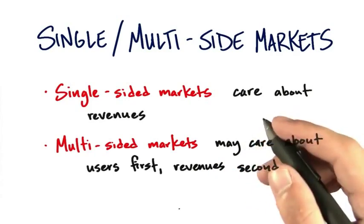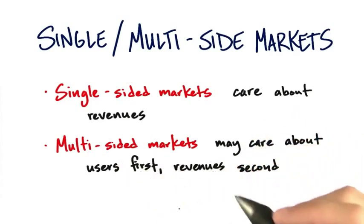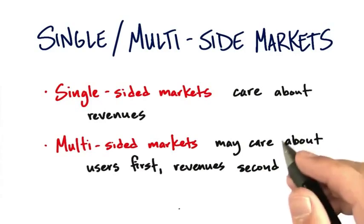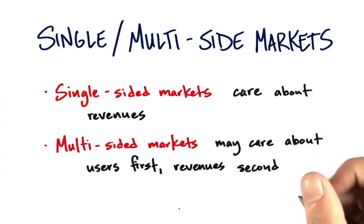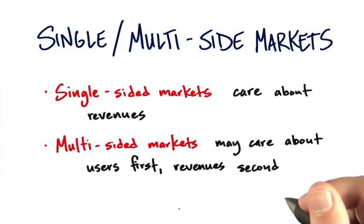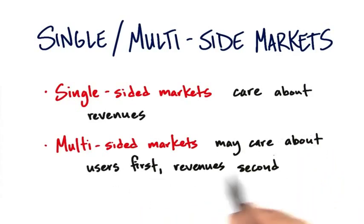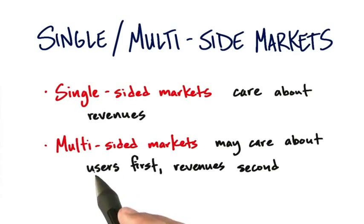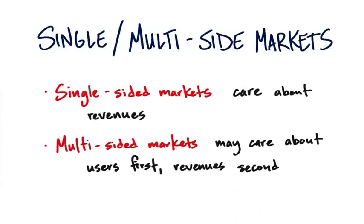In multi-sided markets, the company — your startup — typically cares about acquiring a massive amount of users and then figuring out how to monetize those users next. Google decided to go for millions, then tens of millions of users, and then the keywords came after. Depending on your investors, this might be their strategy.